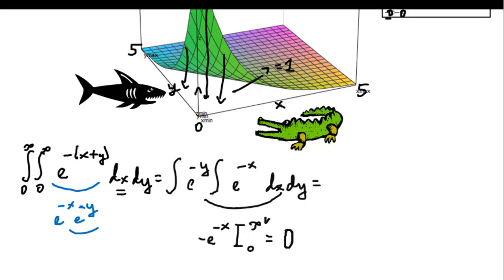And now, when x is zero, minus e to zero is actually one. So minus, minus one, so this equals one.